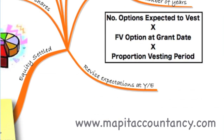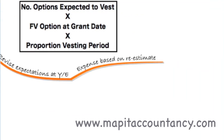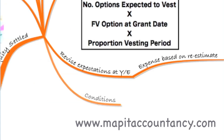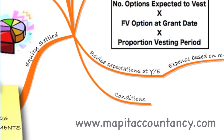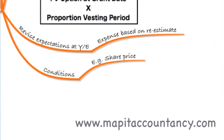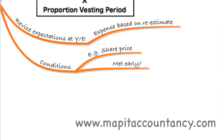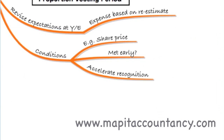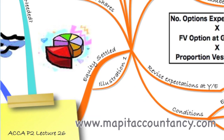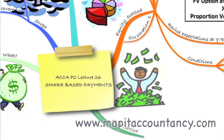Remember that we revise the expectations at each year end and the expense is based on that re-estimate. One last thing: if there are conditions, for example meeting a certain share price, and those conditions are met early, we accelerate the recognition and recognise it all early. We did a detailed example of equity settled in illustration one, so have a look at it if you're not sure.